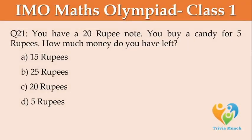You have a 20 rupees note. You buy a candy for 5 rupees. How much money do you have left? Option A: 15 rupees, Option B: 25 rupees, Option C: 20 rupees, Option D: 5 rupees.